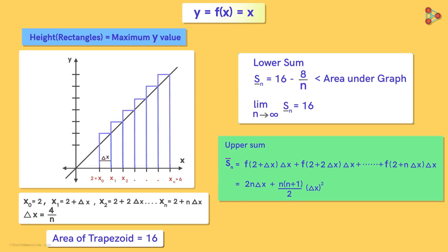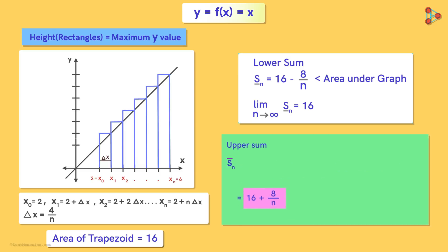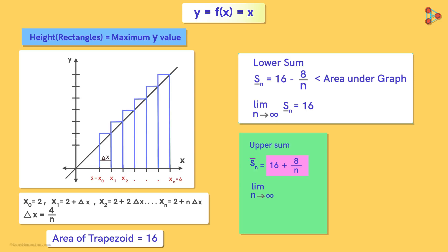We can simplify this expression as we did earlier. From this we can see that as n tends to infinity, the term 8 over n will approach 0, so the sum of the areas of the rectangles will also approach 16.